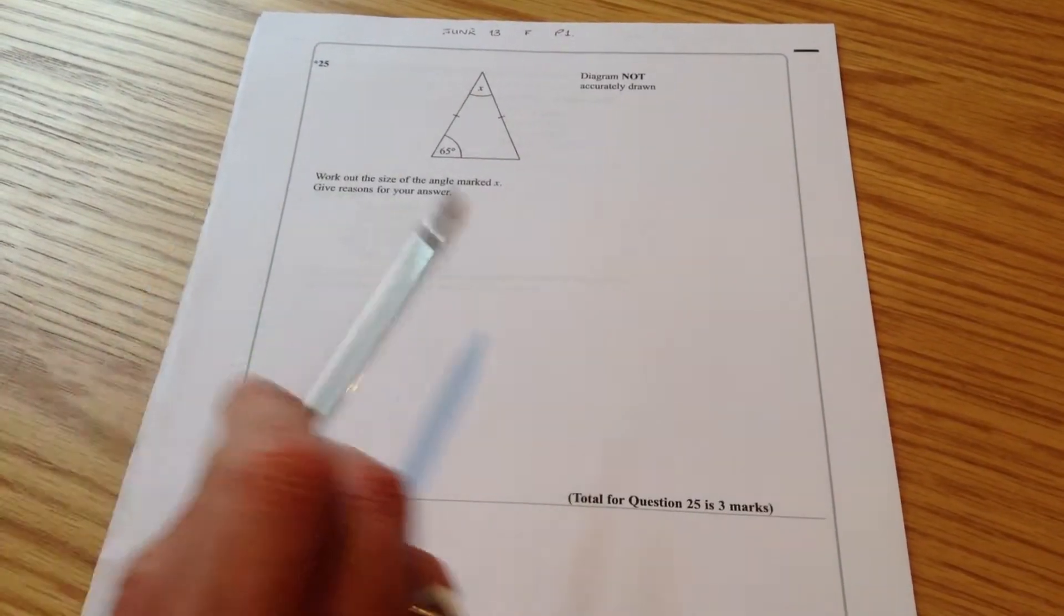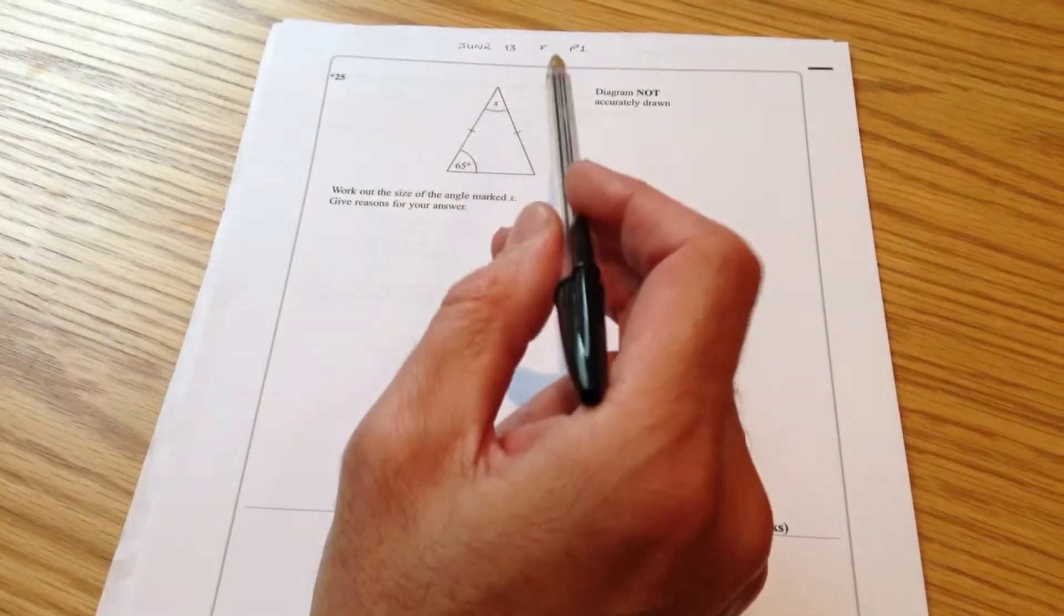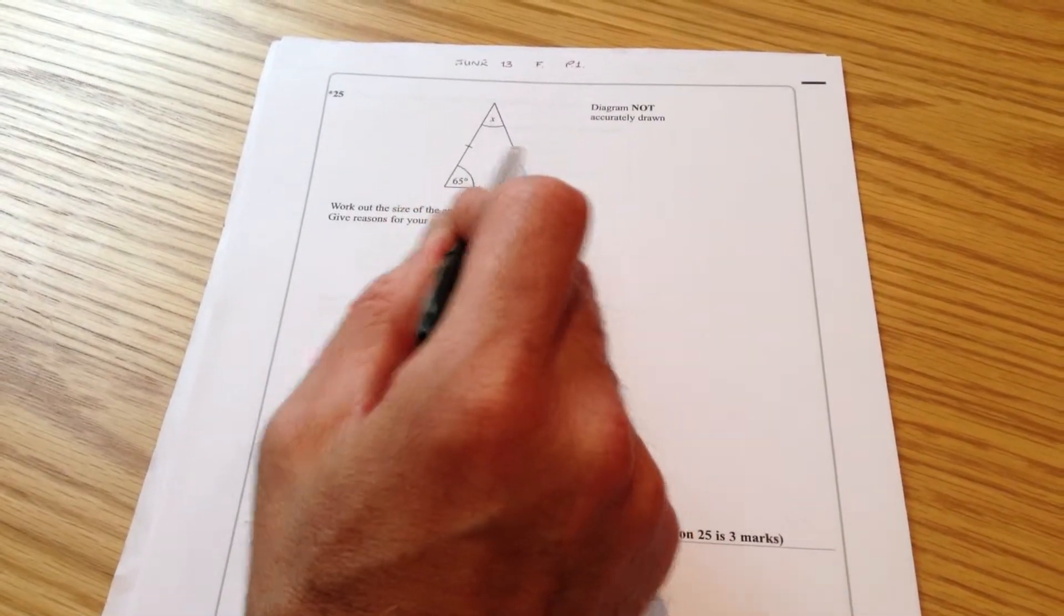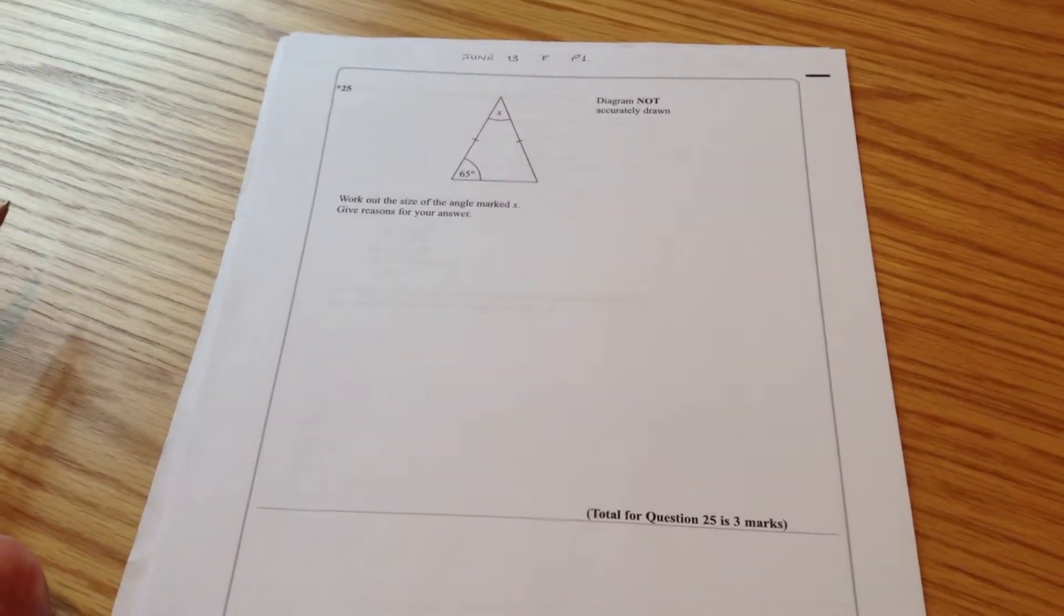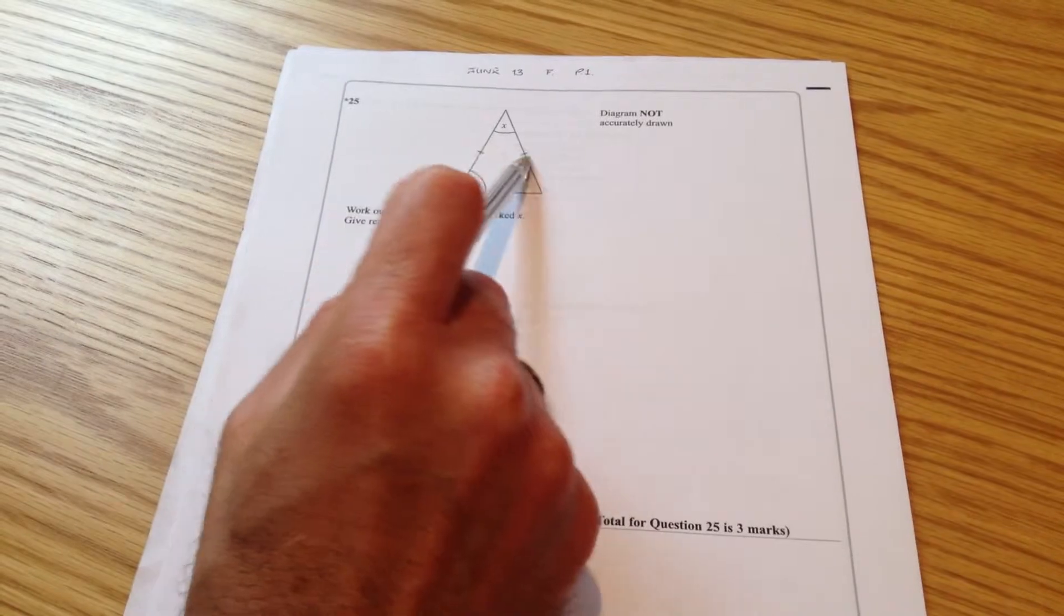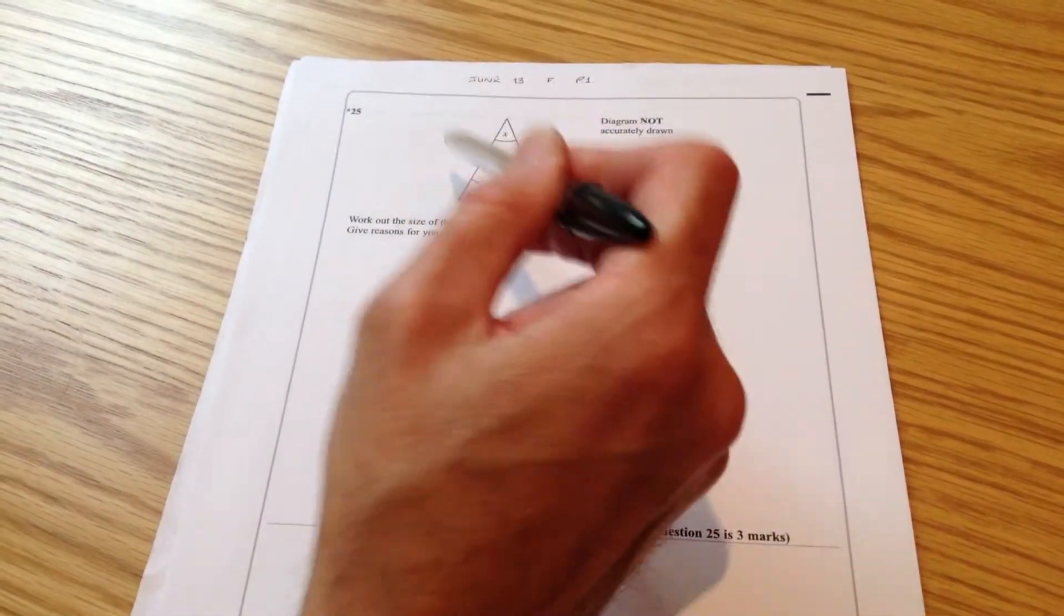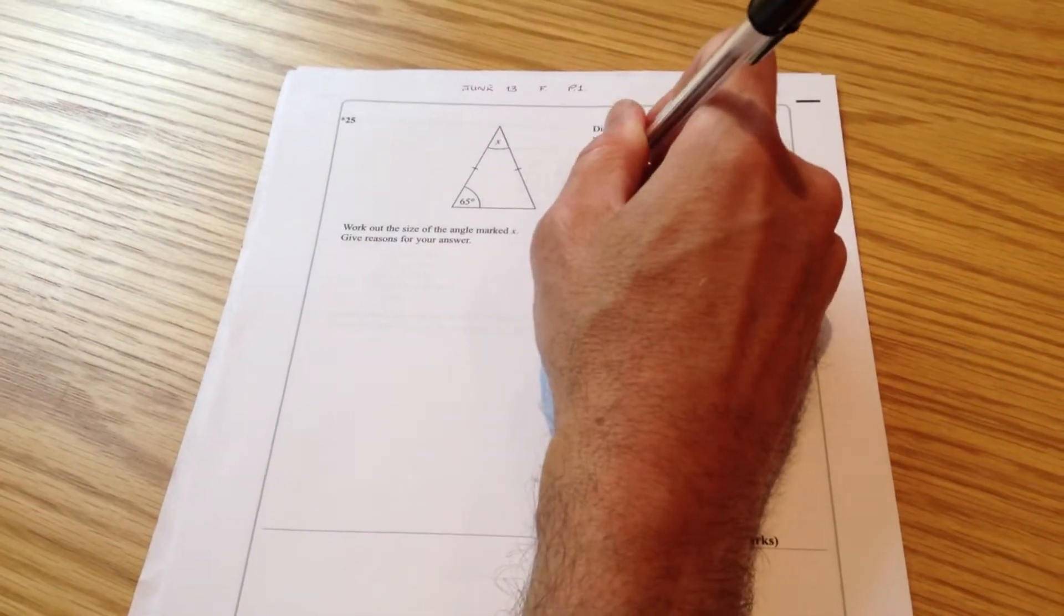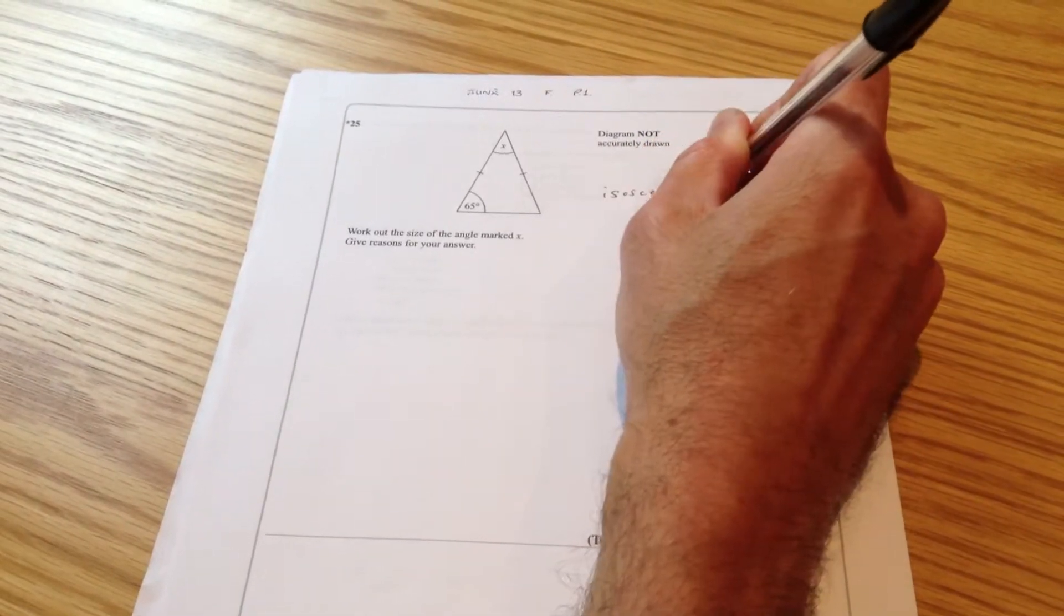Okay, this question obviously wants us to work out a missing angle. Now, they seem to like these particular questions because they involve isosceles triangles, and that's how we can tell it's an isosceles triangle, because of these two little marks here. So they tell us that these two sides are the same length, which means it must be an isosceles triangle.